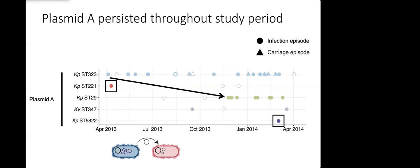We also see a couple of instances of our Klebsiella variicola ST347 emerging now carrying plasmid A. Again we hypothesize that ST323 has donated its plasmid and this is now our first instance of species transmission.